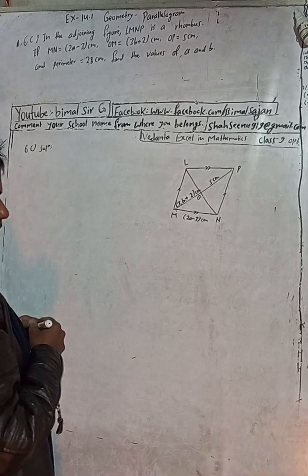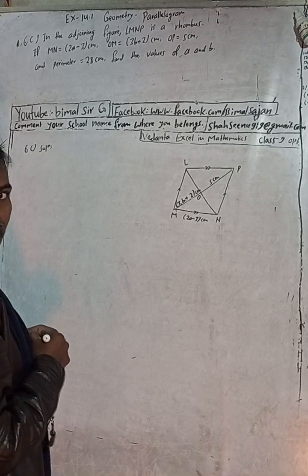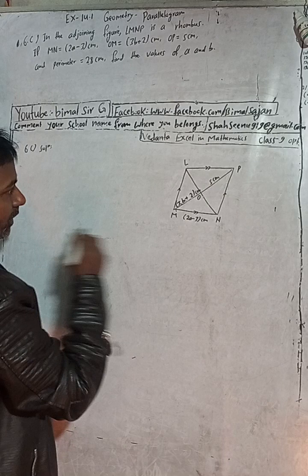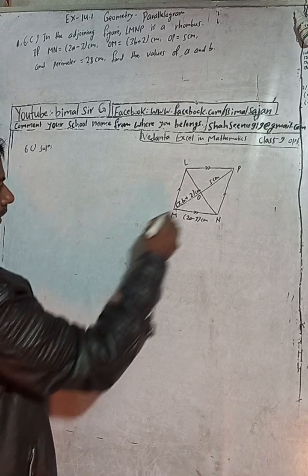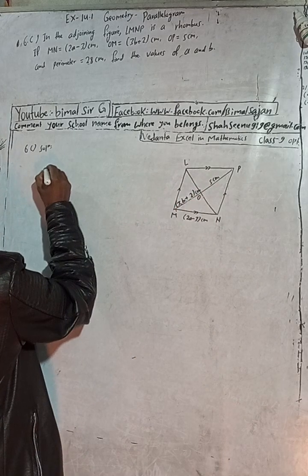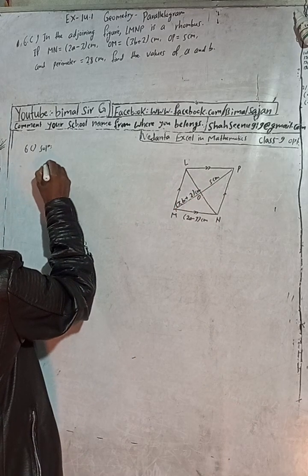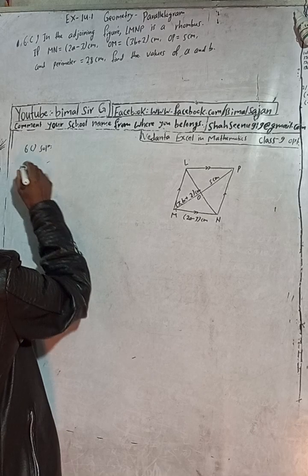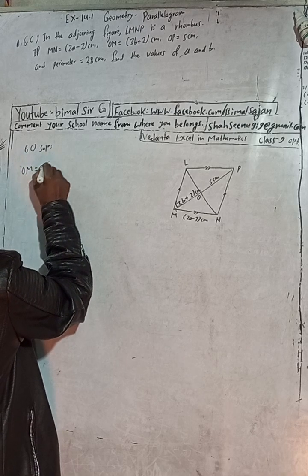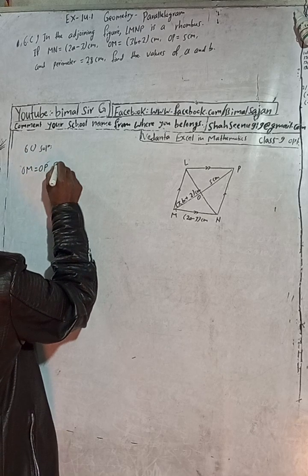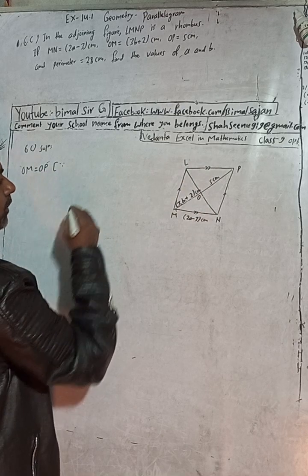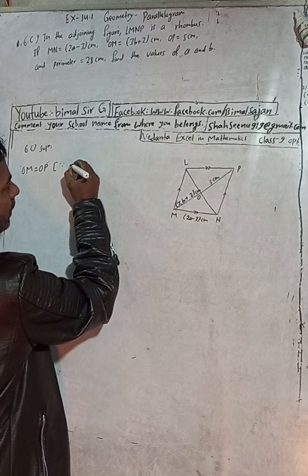So we can now proceed. We can write OM is equal to OP. The diagonals of a rhombus bisect each other, which means OM equals OP.